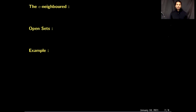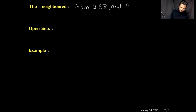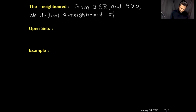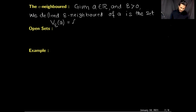The definition of the epsilon neighborhood of a point is: given a real number, given a belongs to the set of real numbers, and epsilon positive, we define the epsilon neighborhood of a, denoted by V_ε(a), as the set of all real numbers which are epsilon distance away from a. In other words, it is the open interval whose endpoints are a minus epsilon and a plus epsilon.